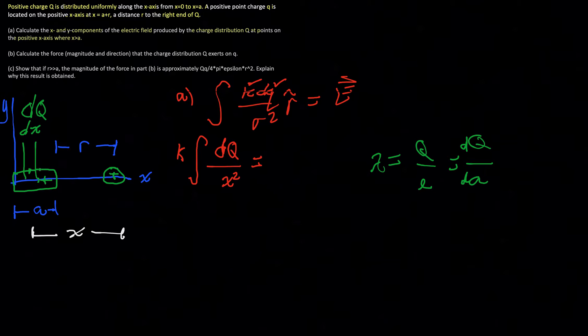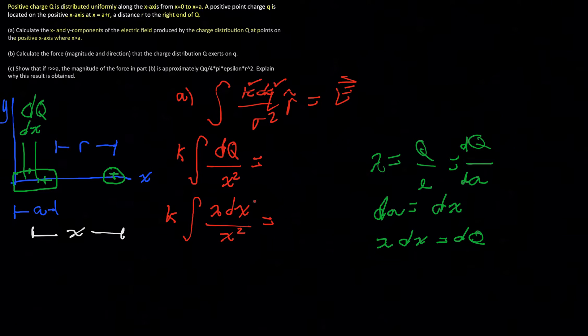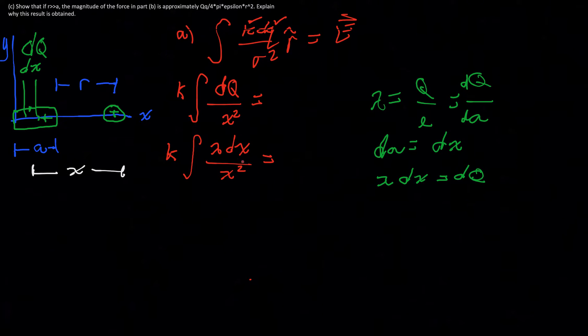Because we're just going to be integrating over the length of the bar. So it's never going to cause us any difficulties with regards to that. So really d a in all the situations we're going to deal with in this problem is equal to dx. And so we can even write that lambda dx is equal to dq just by multiplying both sides here by d a or dx because they're equivalent. And so we can now rewrite this guy as k integral lambda dx over x squared.